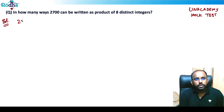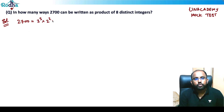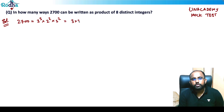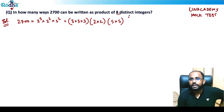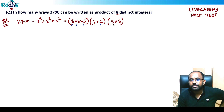Let's first factorize 2700 into its prime factors. 2700 is 3³ × 2² × 5². So I can write: three times three, three times, then two times two, two times, and then five times five. But I cannot use these numbers directly because I need eight distinct integers, and counting here I only have seven numbers.